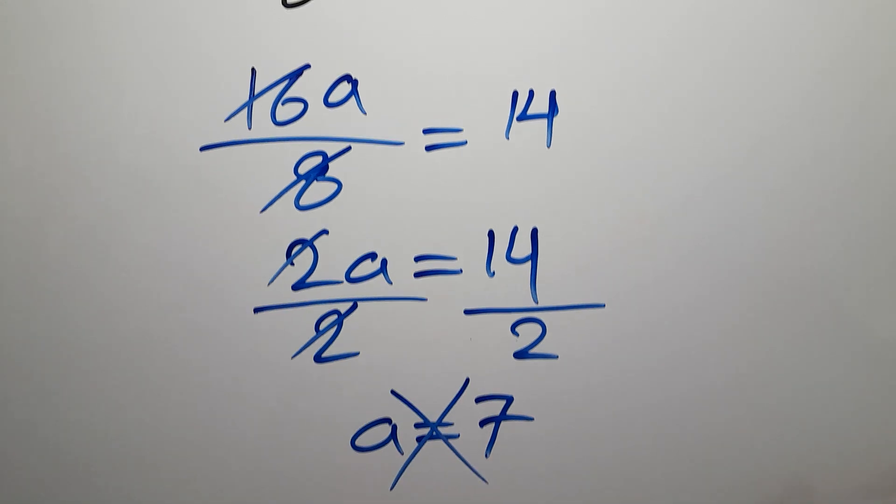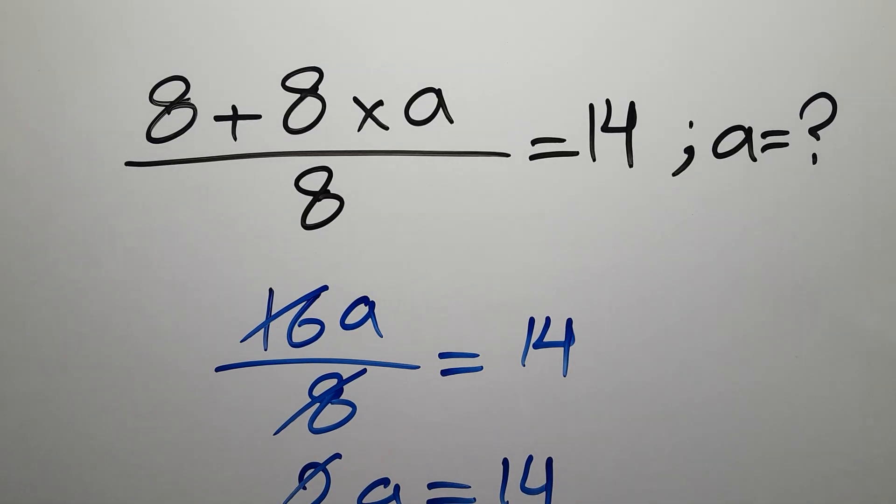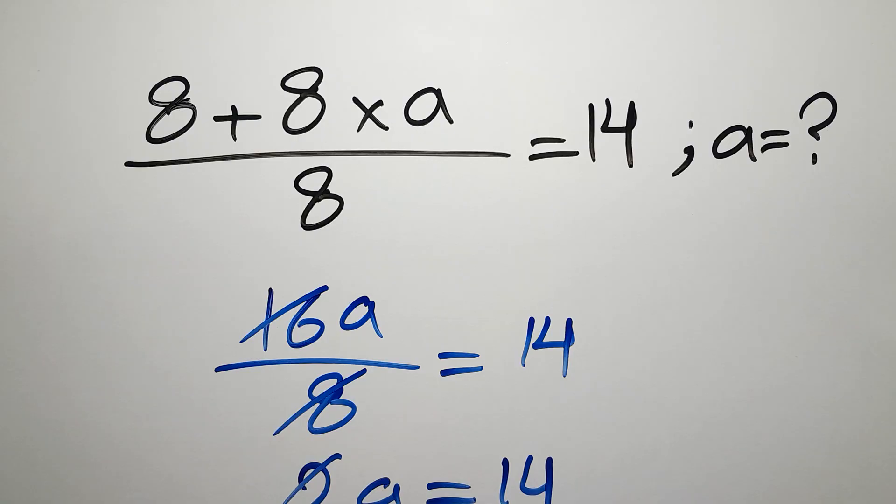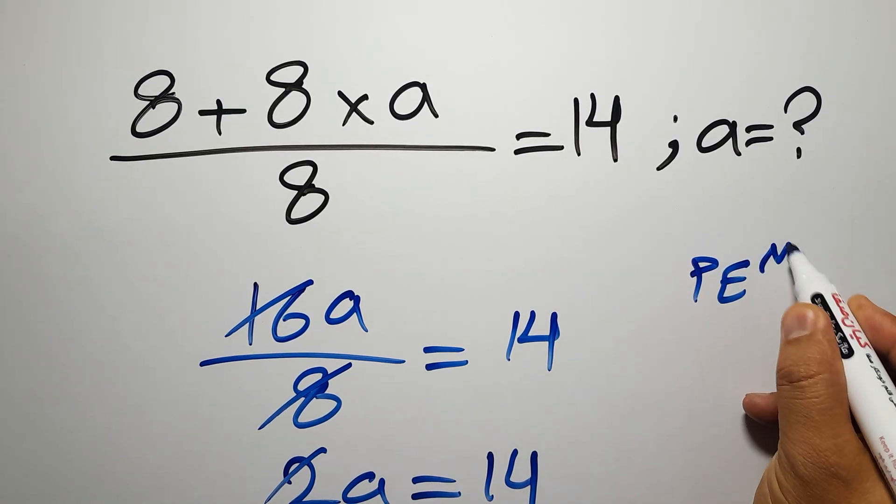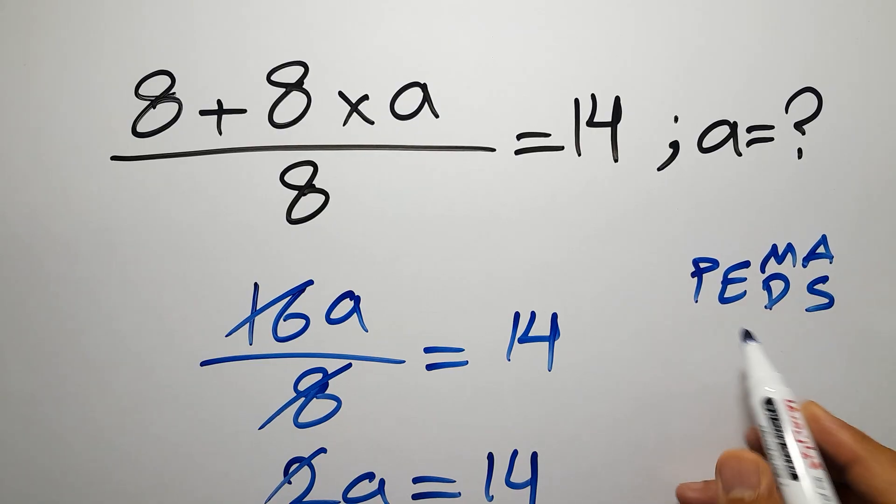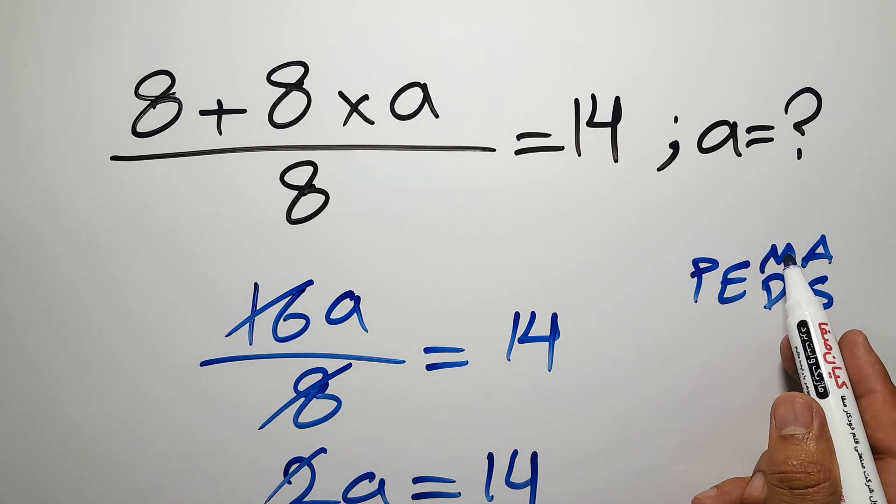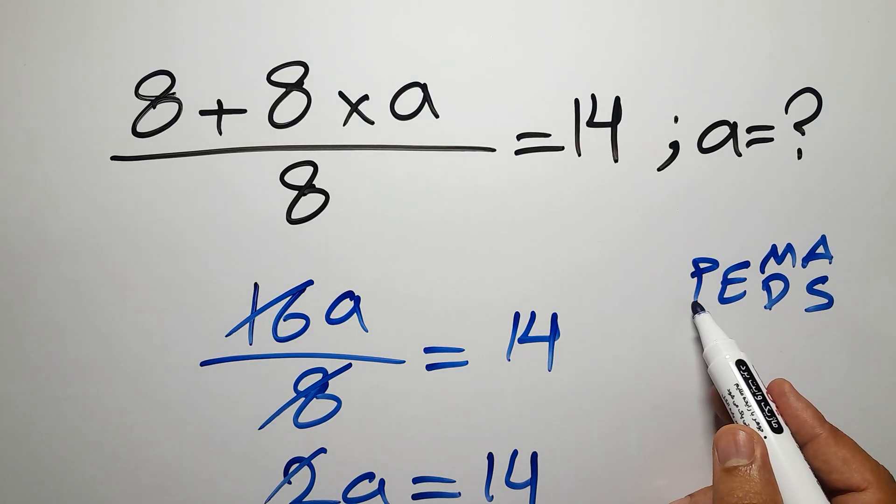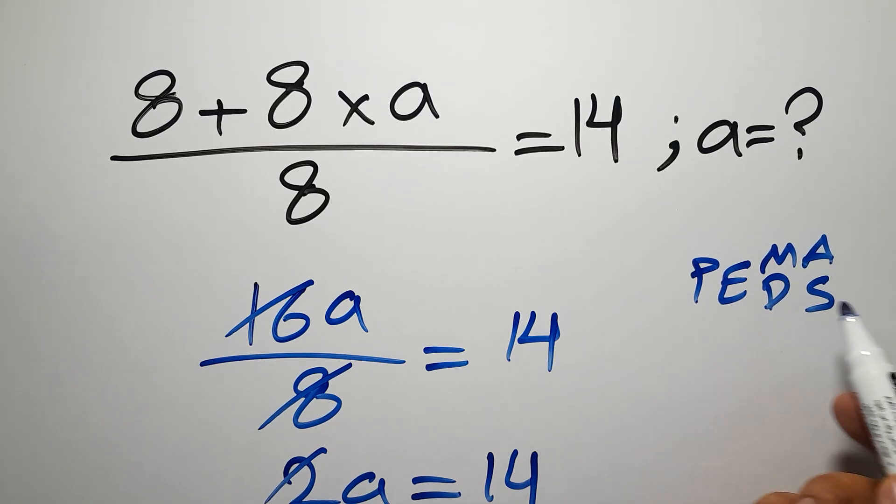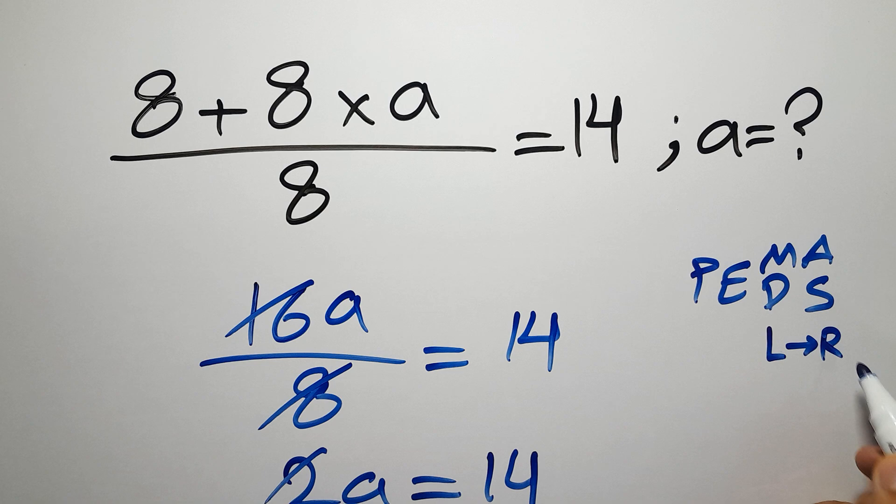But this answer is not correct because according to the order of operations, which is PEMDAS: P stands for parentheses, E stands for exponents, multiplication, division, addition, and subtraction. First we have to do parentheses, then exponents, then multiplication or division, and finally addition or subtraction. Remember that multiplication and division have equal priority and we have to go from left to right, and the same applies to addition and subtraction.